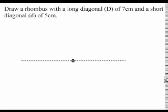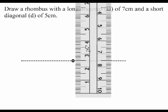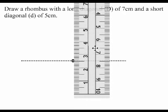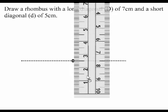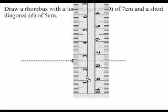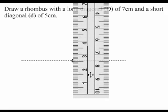The next thing to do is draw the shorter diagonal. Since it is 5 cm long and the diagonals intersect at their midpoints, I place my ruler so that 2.5 cm on the ruler is right at the dot that I placed to mark the midpoint.